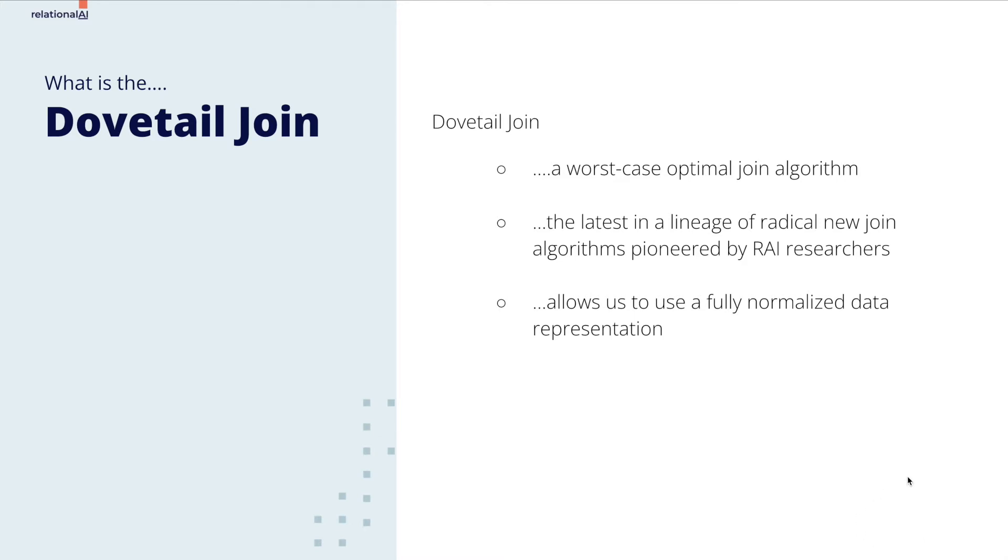Dovetail join's performance is what allows us to use a fully normalized data representation, graph normal form, otherwise known as GNF.